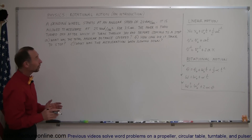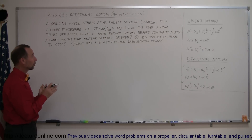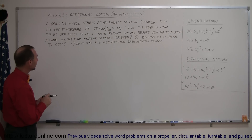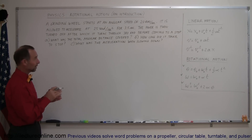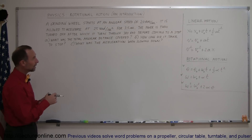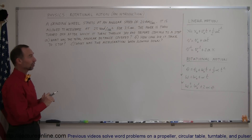Welcome to ILEC Turnline. Here's a really good example of how to utilize what we've learned on rotational motion. A grinding wheel starts at an angular speed of 20 radians per second. It is then allowed to accelerate at 25 radians per second squared for three and a half seconds. The power is then turned off, after which it turns 380 radians before coming to a stop. What was the total angular distance covered? How long did it take to stop? And what was the acceleration when slowing down?